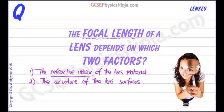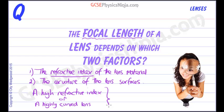So we can say a high refractive index or a highly curved lens, and that would be quite a thick lens at the center, both of these things would mean a short focal length and a more powerful lens. Thank you.